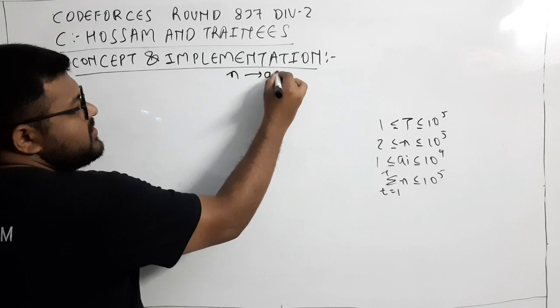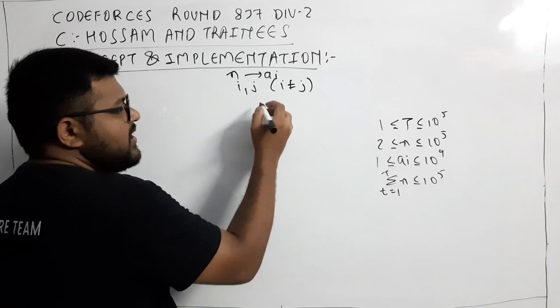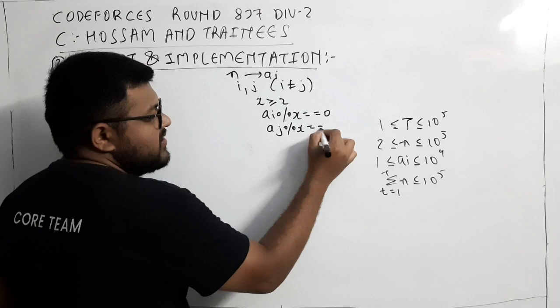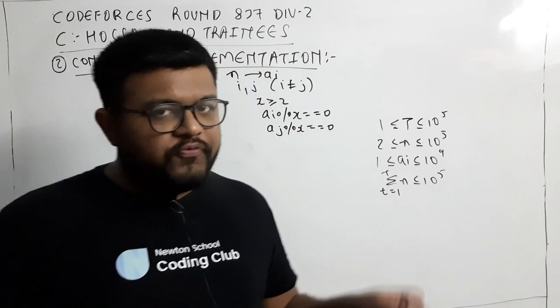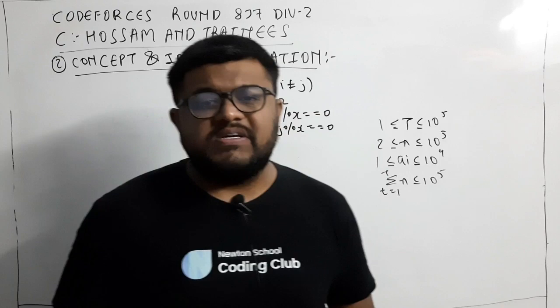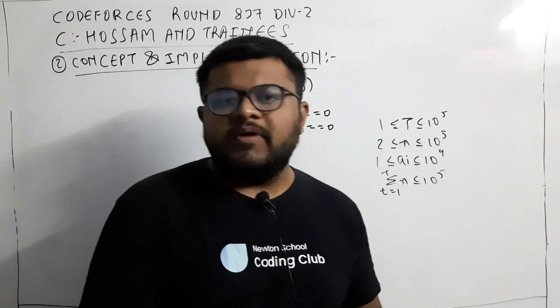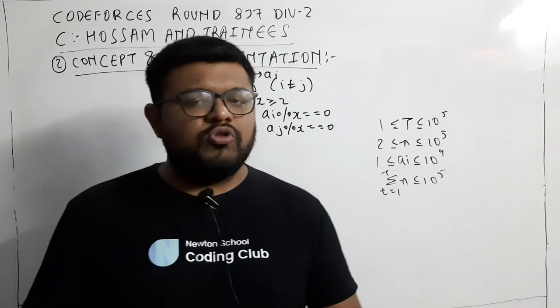If there doesn't exist any successful pair, print 'NO'. So i ≠ j and there exists an integer X ≥ 2 such that A[i] and A[j] are both divisible by X — then it's a successful pair, and we print 'YES'. One method could be using two for-loops to generate every possible pair and compute their GCD. If even one pair has GCD ≥ 2, that's a successful pair. But two for-loops gives O(n²) which will cause a time limit exceeded.